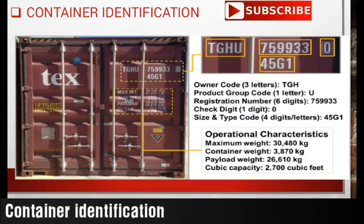There are usually two sizes for containers — one is 45 feet and the other is 20 feet. In this example we can see that this container is 45 feet, and the type code is G1.